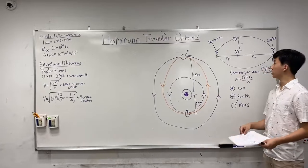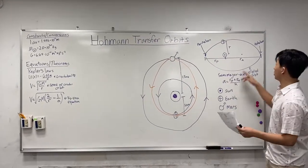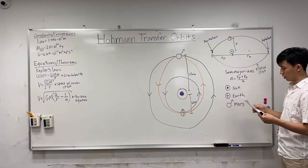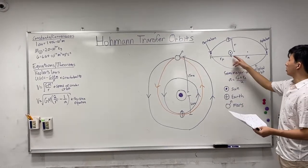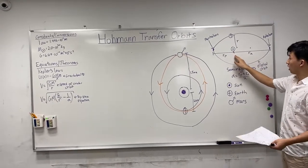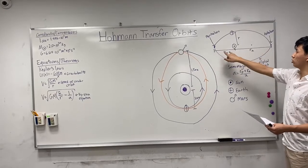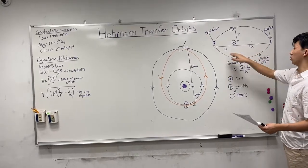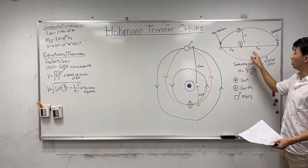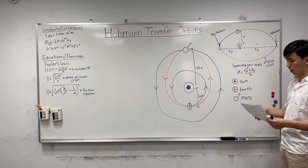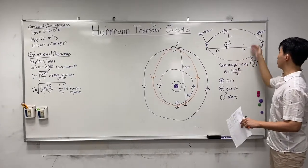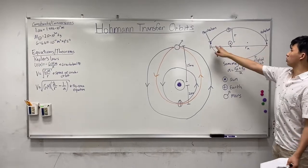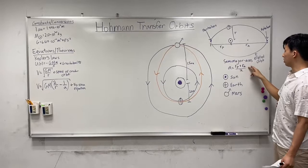Some basic stuff we have to cover first is the parts of an elliptical orbit. We have an ellipse here representing some orbit. Using Kepler's first law, we know the Sun has to be at one of the foci. There's the perihelion, which is the point on the orbit closest to the Sun, and then there's the aphelion, which is the point farthest from the Sun. We'll denote those distances as R_P and R_A, and R will represent any general position on the orbit. The semi-major axis is the major axis divided by two, so R_P plus R_A over two.